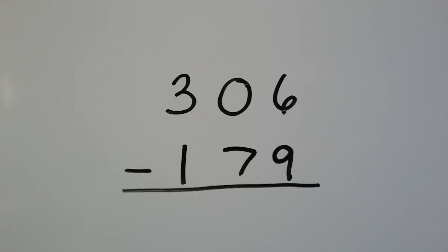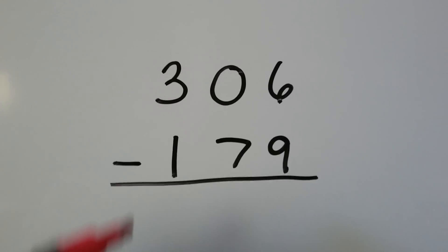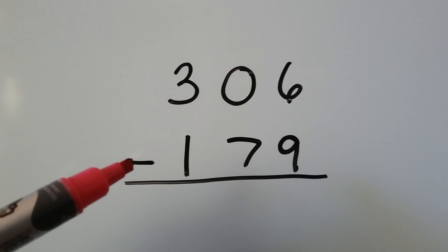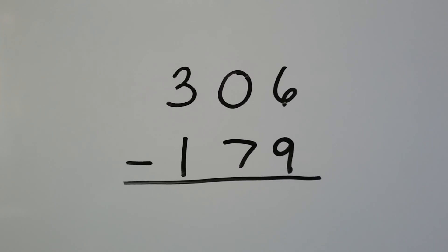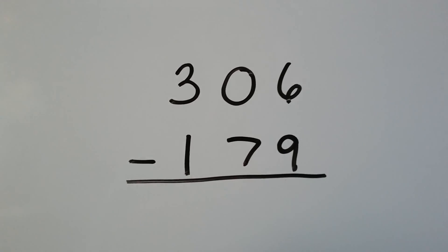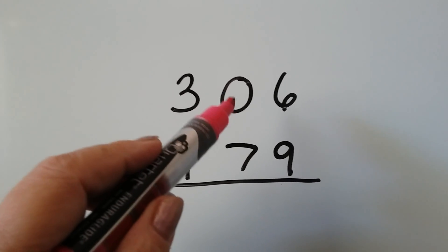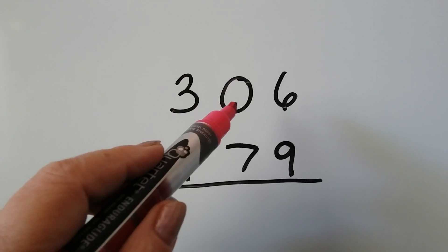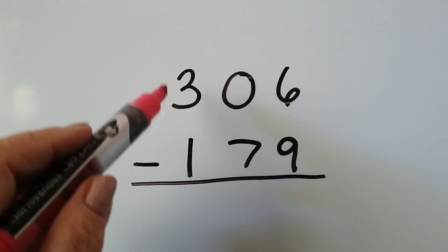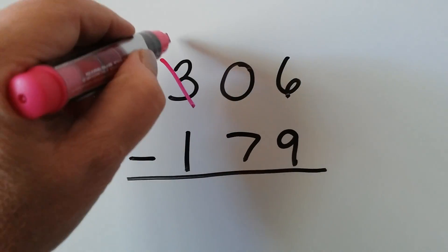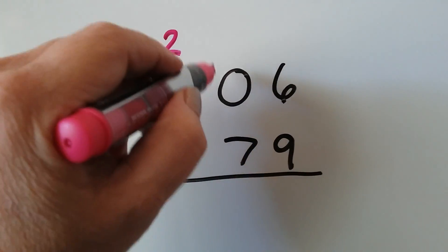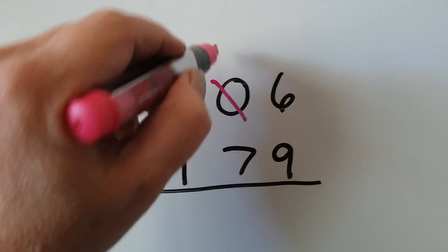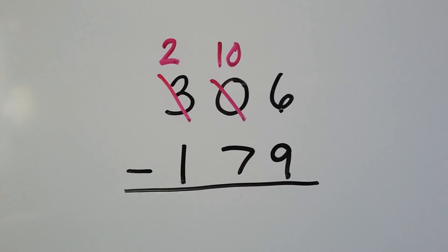Let's try it again. This one's going to be a little bit harder because we're going to have to regroup twice. We have 306 minus 179. We have a six and we need to take nine away — we can't do that, the nine's too big. And we can't regroup from the tens place because it's a zero. So now we have to go way over to the hundreds place. That becomes a two — it's one less. And instead of zero tens, now we have ten tens because ten tens make a hundred.